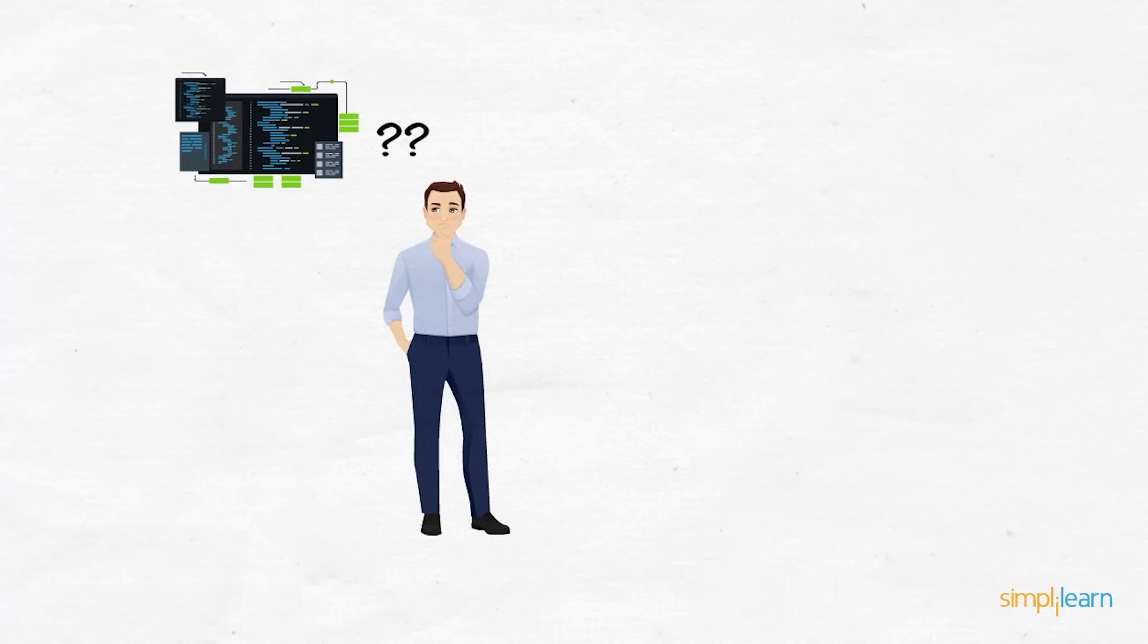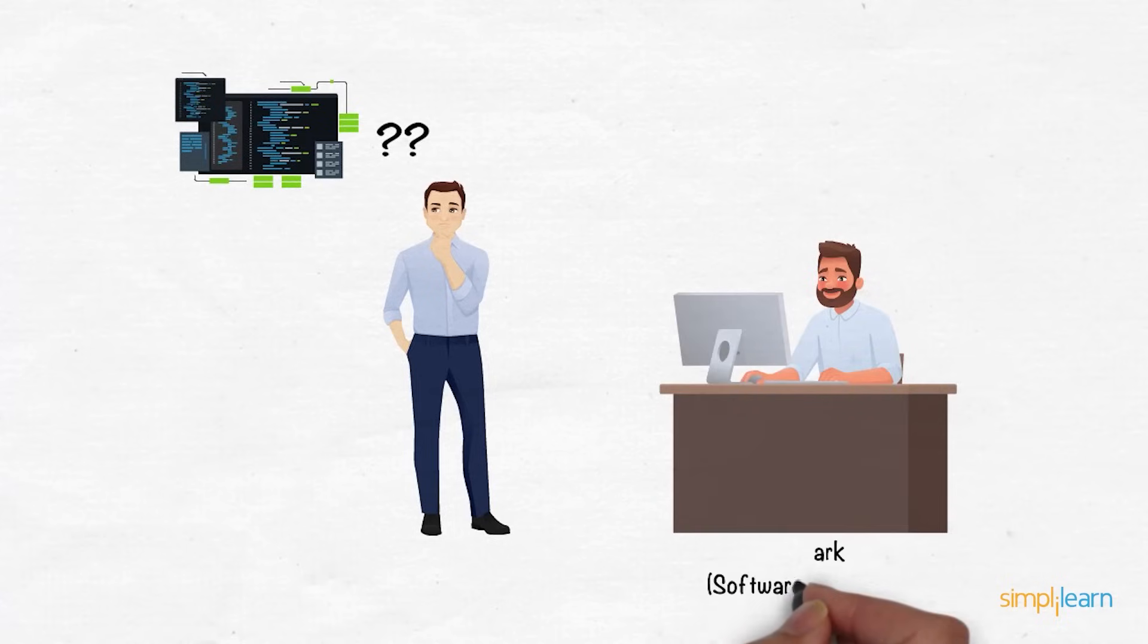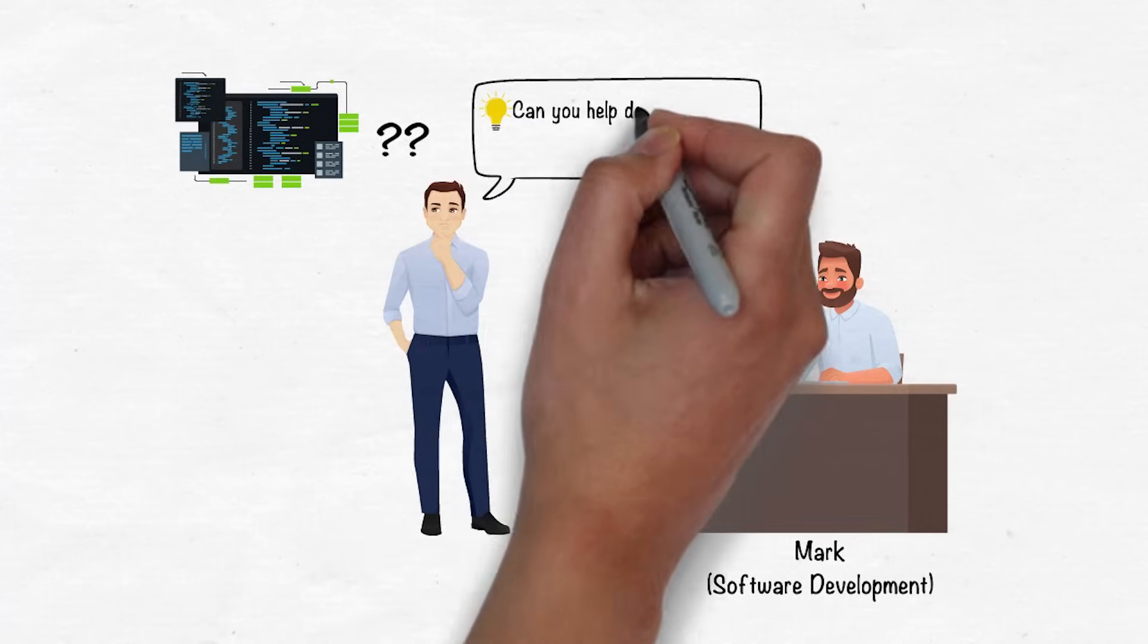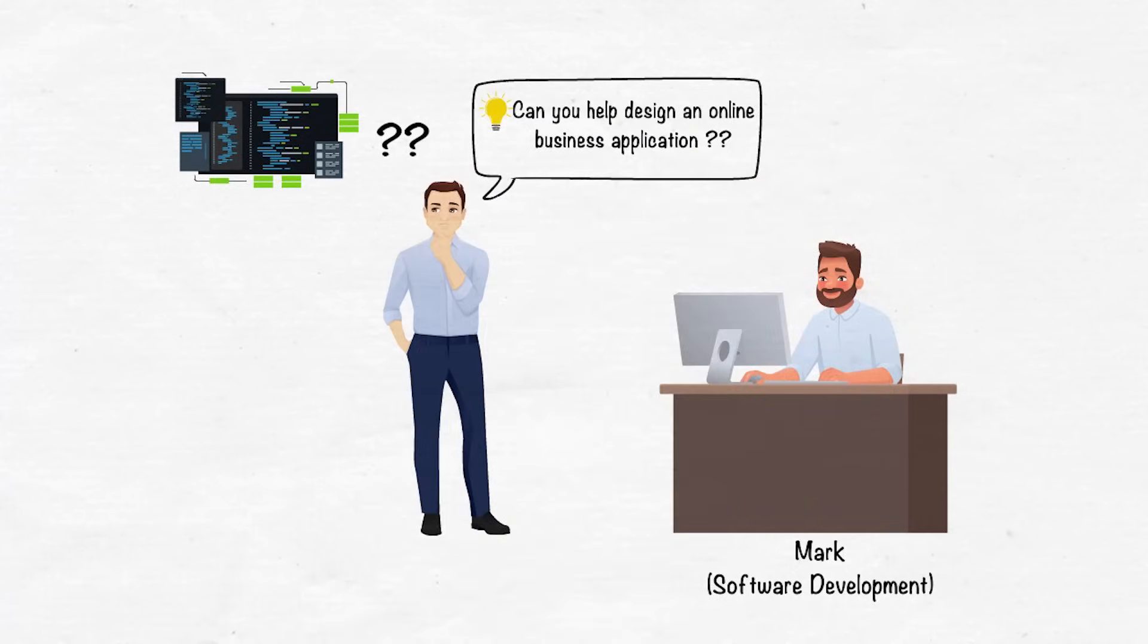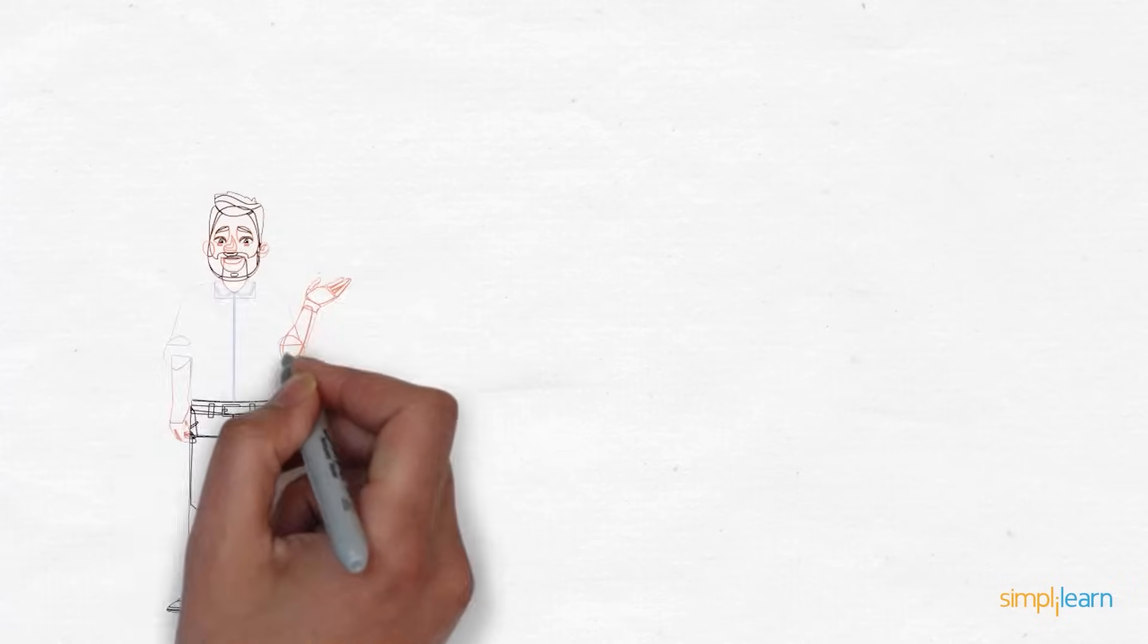To start with his business idea, Adam meets his cousin Mark, who is a software developer and a good one at it. He pitches his idea and asks his cousin to help him design an online business application. Mark explains to Adam the way of designing the best online shopping application.